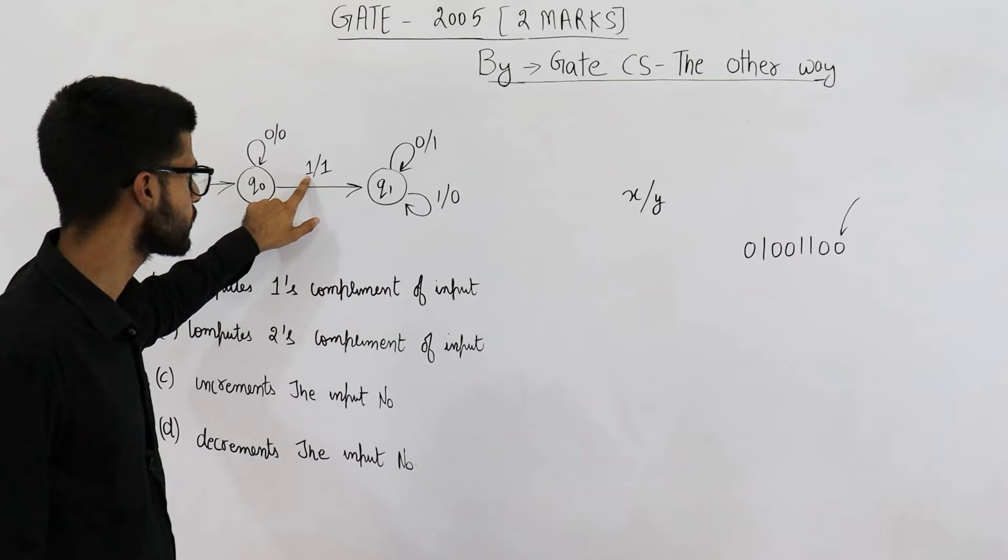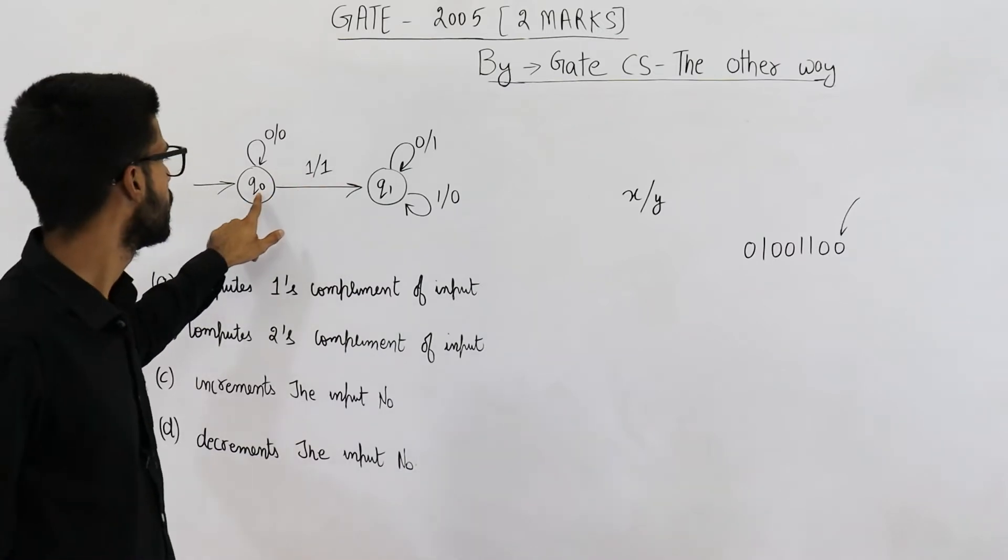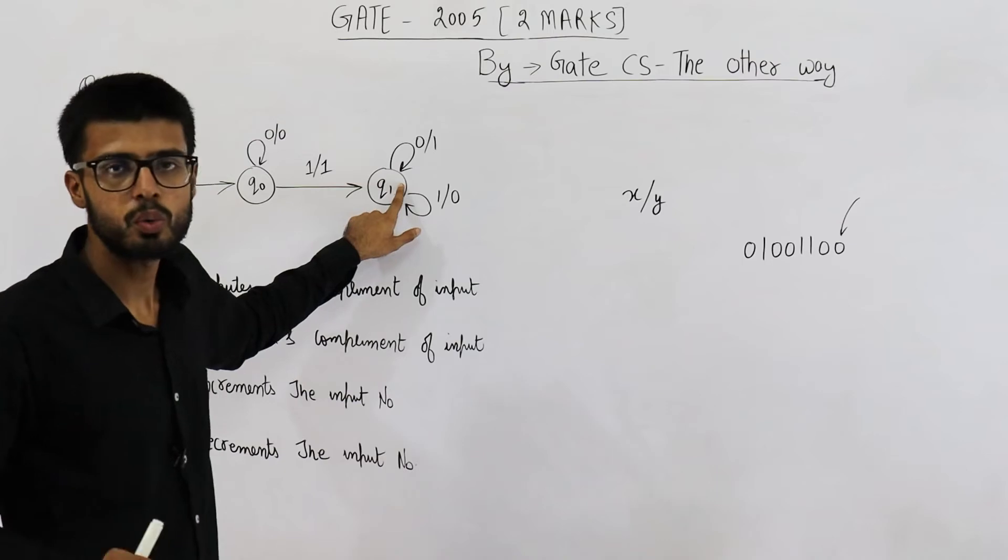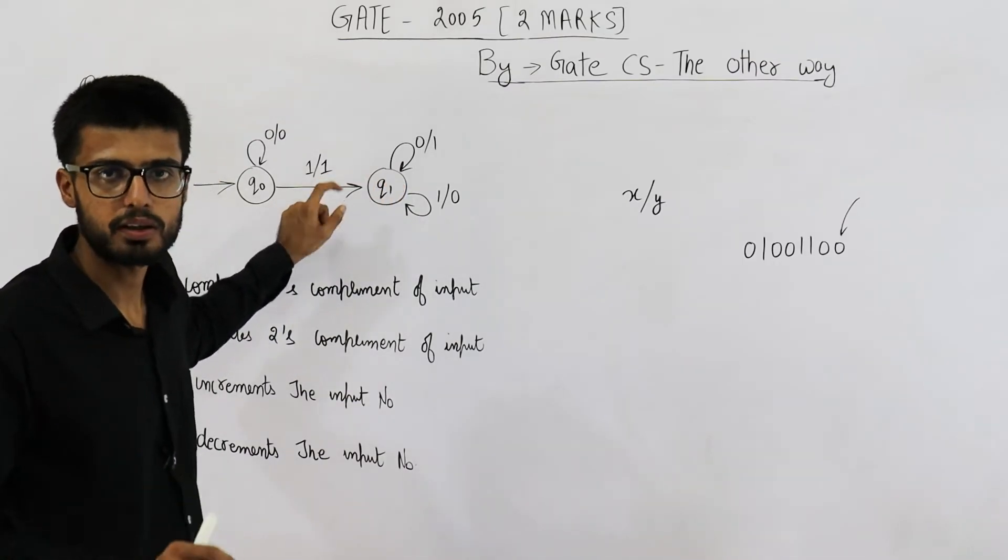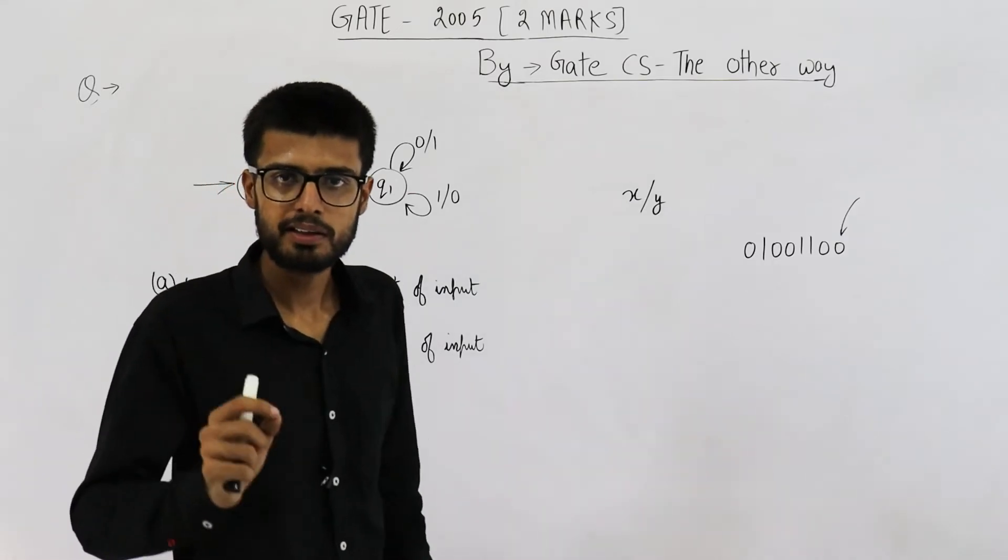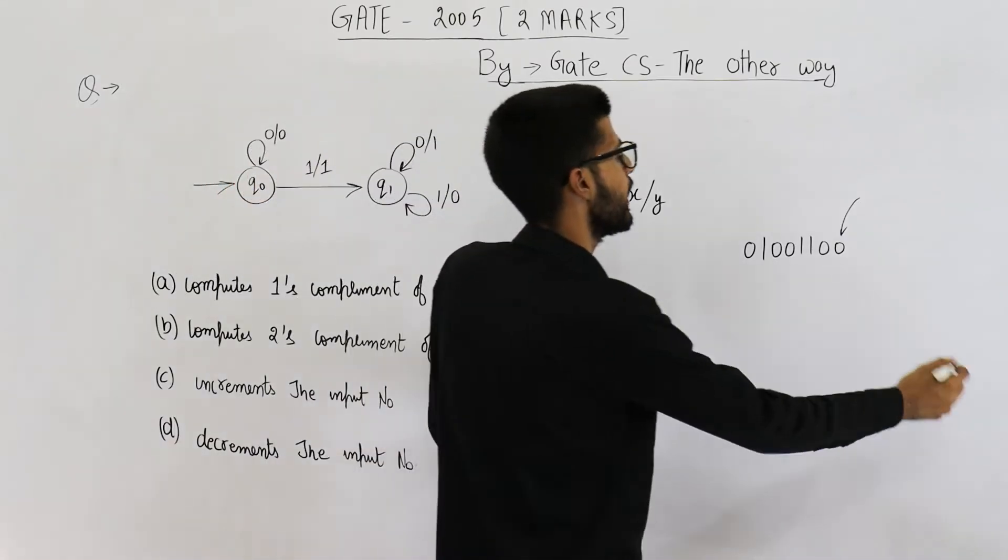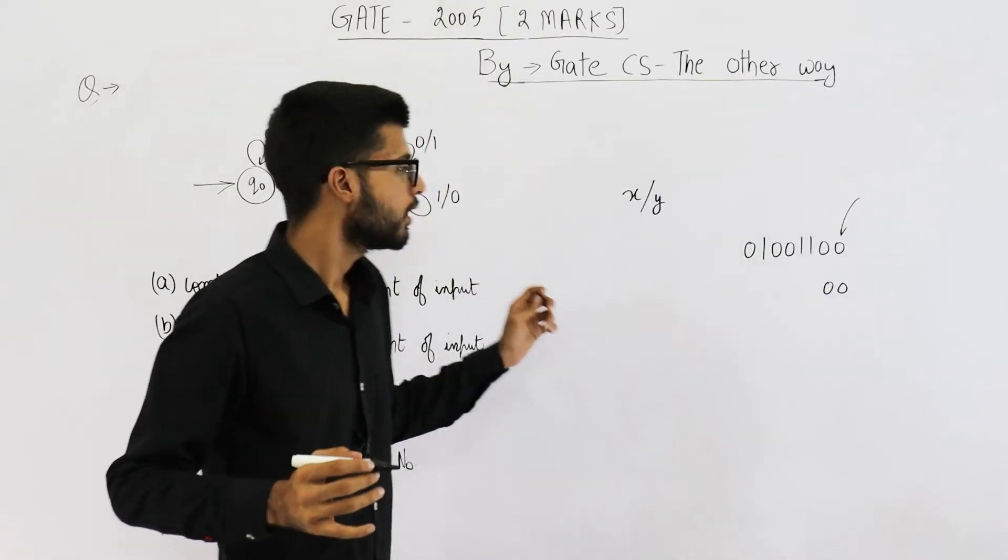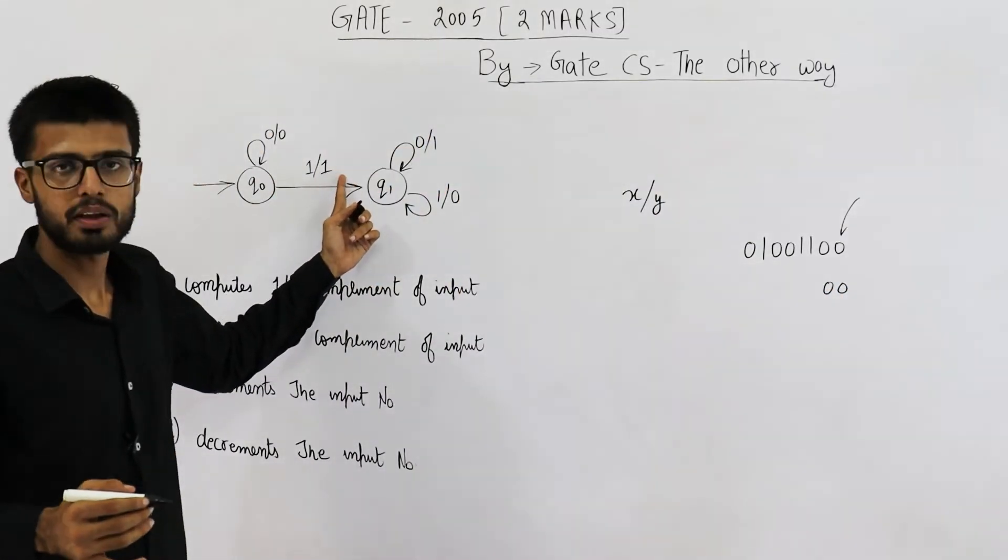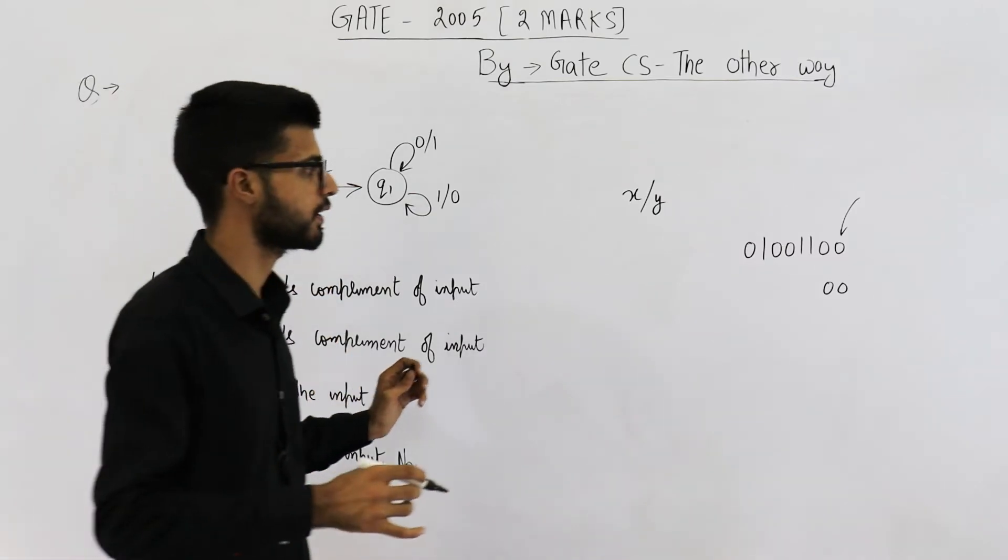But when you see a 1, when you encounter the first 1, you will change state to q1. But the output will still be 1. That means any number of 0s, they will be outputted as it is. So 0, 0 will be left as it is. Until you encounter the first 1, that 1 will also be left as it is.